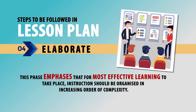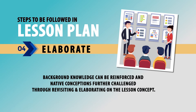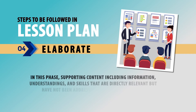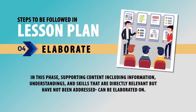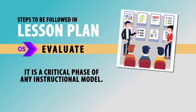Then comes Elaborate. This phase emphasizes that for most effective instruction and learning to take place, instruction should be organized in increasing order of complexity. Students need to develop a meaningful context into which new learning can be connected. Background knowledge can be reinforced and naive conceptions further challenged through revisiting and elaborating on the lesson concept. Supporting content — including information, understandings and skills that are directly relevant but have not yet been addressed — can be elaborated on. Elaborate is a critical phase of any instructional model.